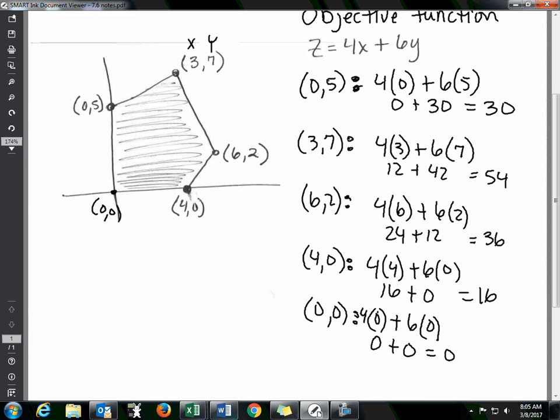And then you just have to tell me what the max and min are. So the minimum is 0 at 0,0. The max—what's the highest value you got for your objective function? The highest value is 54 at 3,7.